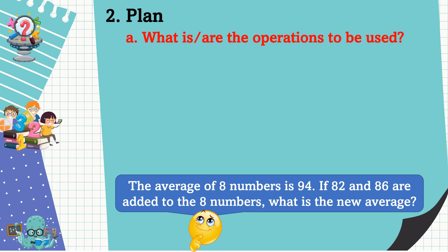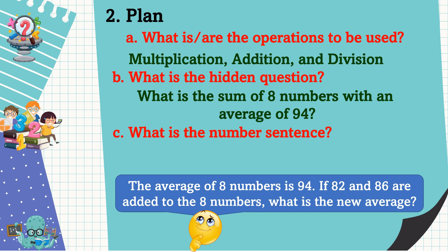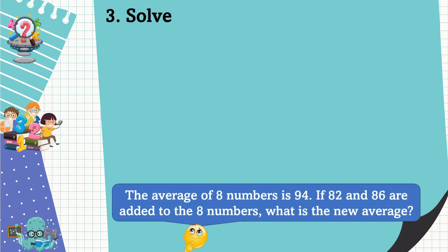We're going to formulate a plan. What is or are the operations to be used? The operations are multiplication, addition, and division. What is the hidden question? What is the sum of eight numbers with an average of 94? What is the number sentence? The number sentence is [(94 × 8) + (82 + 86)] ÷ (8 + 2) = N.